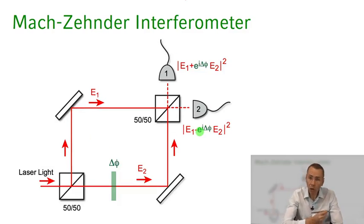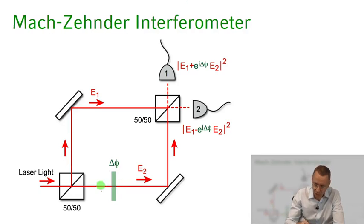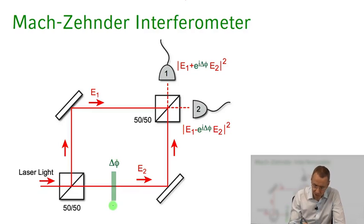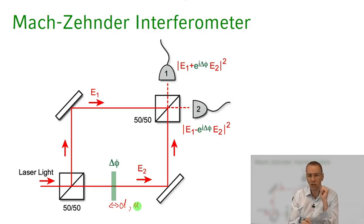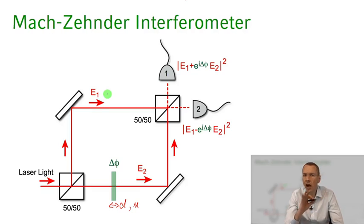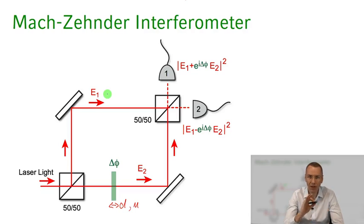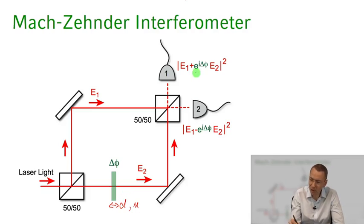Now let's introduce a phase shift between the two paths. In path two we insert a thin glass plate of thickness d with refractive index n, which introduces a phase shift delta phi for the light propagating along that path relative to path one. Think for a moment about how large this phase shift actually is. That additional phase shift now appears in front of the E2 amplitude in both the plus and minus terms for the two detectors.